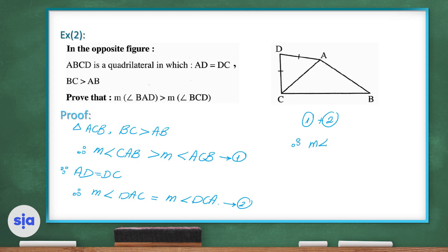If we add inequality 1 and inequality 2 together, we get that the measure of angle BCD is greater than the measure of angle BAD.